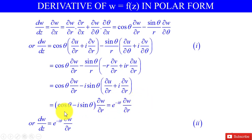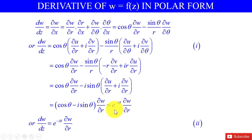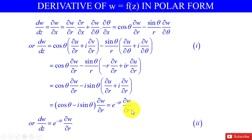This simplifies to (cosθ - i sinθ) · ∂w/∂r = e^(-iθ) · ∂w/∂r, because e^(-iθ) = cosθ - i sinθ. So this quantity equals e^(-iθ) · ∂w/∂r.